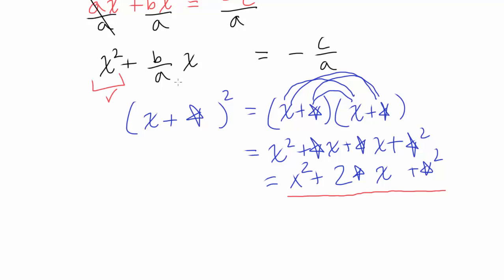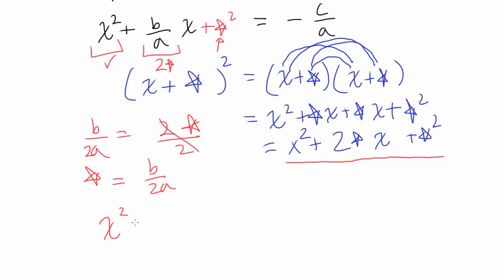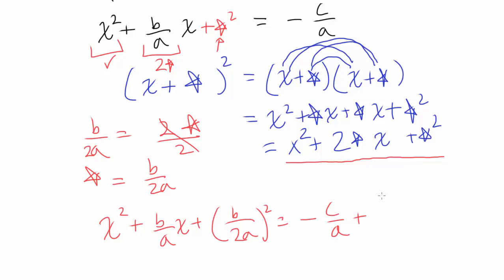We want to match the left side in the form x squared plus 2 star x plus star squared. We have x squared — that's good. We need 2 star x, so b over a equals 2 times the star. Dividing by 2, our star equals b over 2a. So we add star squared to both sides, giving us x squared plus b over a times x plus b over 2a squared on the left, and we add b over 2a squared to the right side as well.